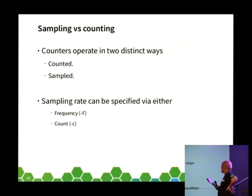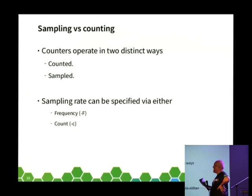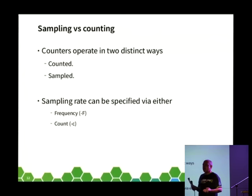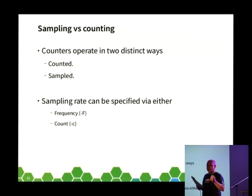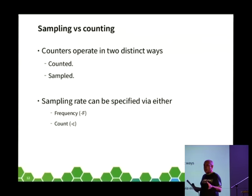Each microarchitecture has a different number of actual counters that can run at a particular point in time — sometimes one, sometimes two, sometimes four. These counters work in two distinct ways. The counted interface begins counting and counts the number of occurrences of a low-level event over a period of time. The sample interface has a bit in the counter which, when set, generates a local APIC interrupt when that counter overflows around zero. The instruction pointer at the time the counter overflowed is taken, allowing us to implement a sampling interface — sampling so many times per second to get an idea where the program counter is over time.